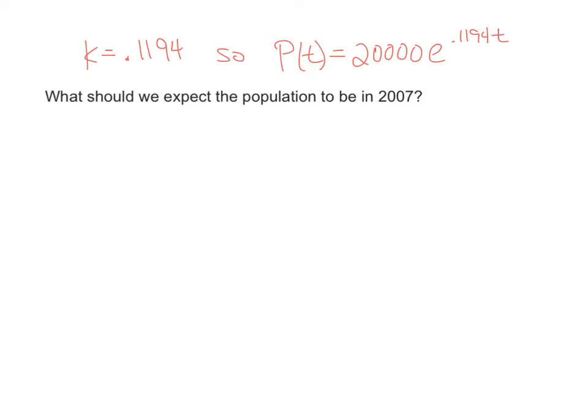The first thing we need to do is find out how many years past 1995 is 2007. We'll subtract 2007 minus 1995, and that gives 12 years.